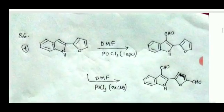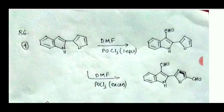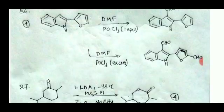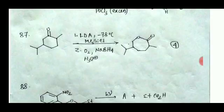For question number 86, it is the Vilsmeier-Haack formylation reaction. There is competition between the furan group and the indole group. Indole is more reactive, so when one equivalent of POCl3 is given, only the indole ring will be formylated. When excess POCl3 is given, both the furan and the indole will be formylated. Option 4 is the correct answer.